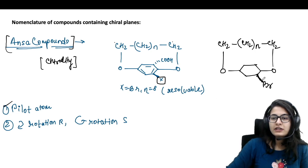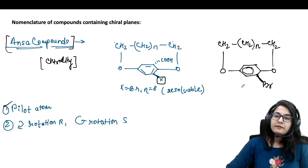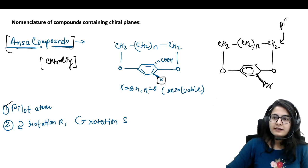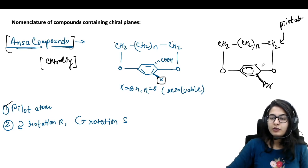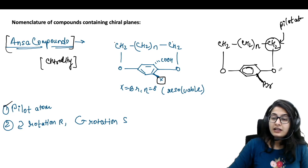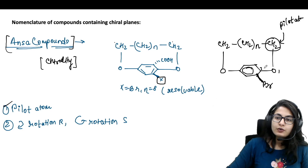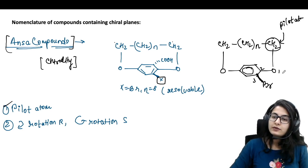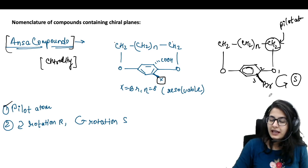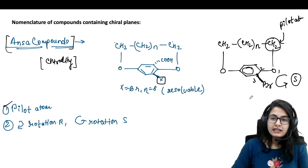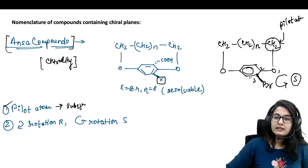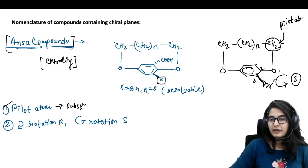Let's say we only have a bromine over here — this will be easy to start with. Your substituent is on the right hand side of the benzene ring, so you take the right-hand-side CH₂ methylene as the pilot atom. Then you start the numbering from the following atom: one for oxygen, two for this carbon, and three for this carbon. If the rotation is clockwise it is R, if anti-clockwise it is S.